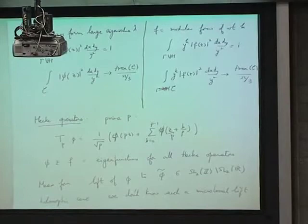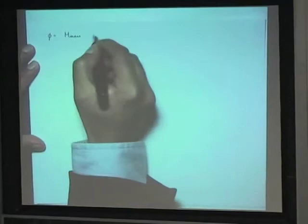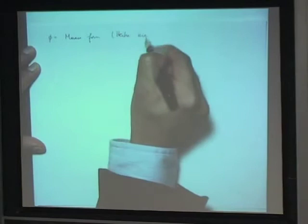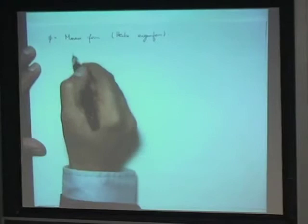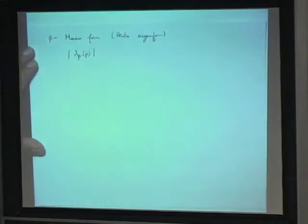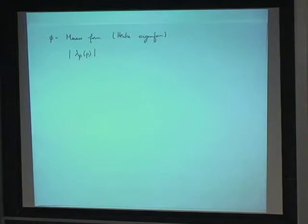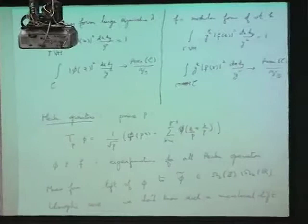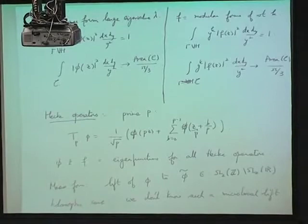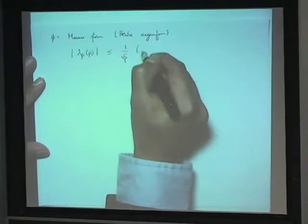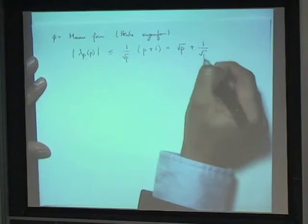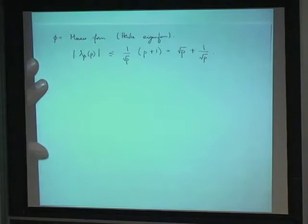Suppose phi is a Maass form which is an eigenfunction of all Hecke operators. What can we say about the size of the p-th Hecke eigenvalue lambda_phi(p)? Pick z where phi(z) is largest. The left side is just lambda(p) times the largest value phi takes, and the right side is bounded by the p+1 points I have, giving something like square root of (p+1) over square root of p — a trivial bound for these Hecke eigenvalues.